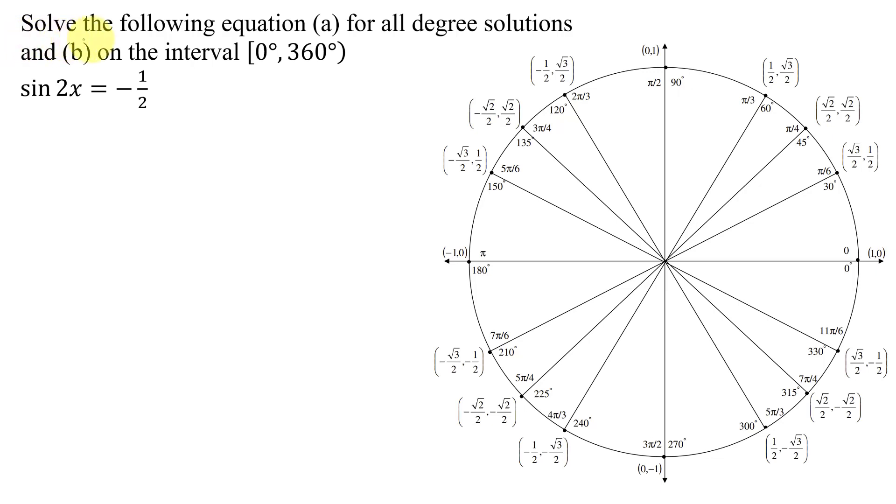In this example, I need to solve the following equation. Part A for all degree solutions, and Part B on the interval 0 to 360 degrees. Here's my equation: the sine of 2x equals negative a half.